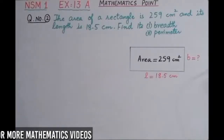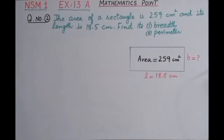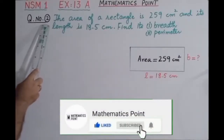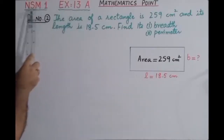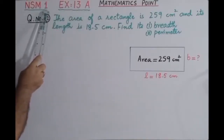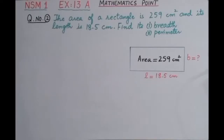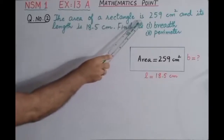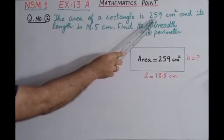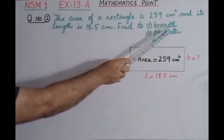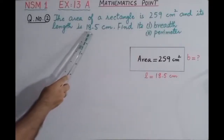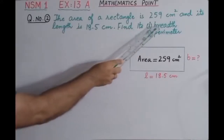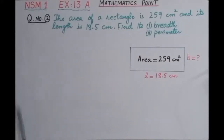Bismillahirrahmanirrahim. Assalamu alaikum, dear students. In this video we are going to solve question number two, exercise 13A of New Syllabus Mathematics Book 1. The question is: the area of a rectangle is 259 centimeter square and its length is 18.5 centimeter. Find its breadth and also find its perimeter.